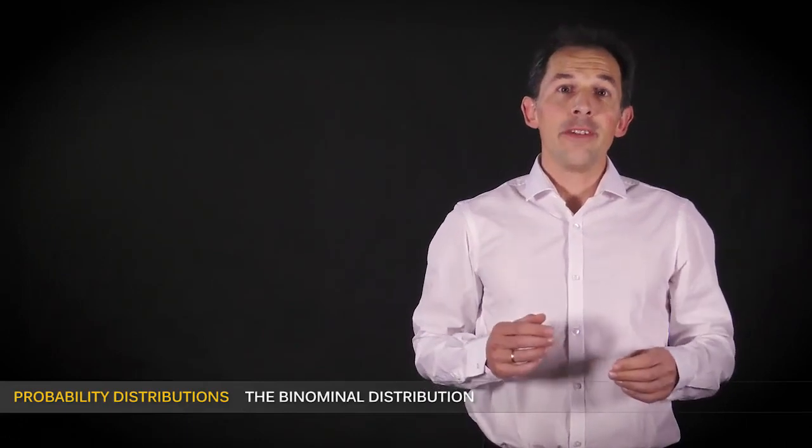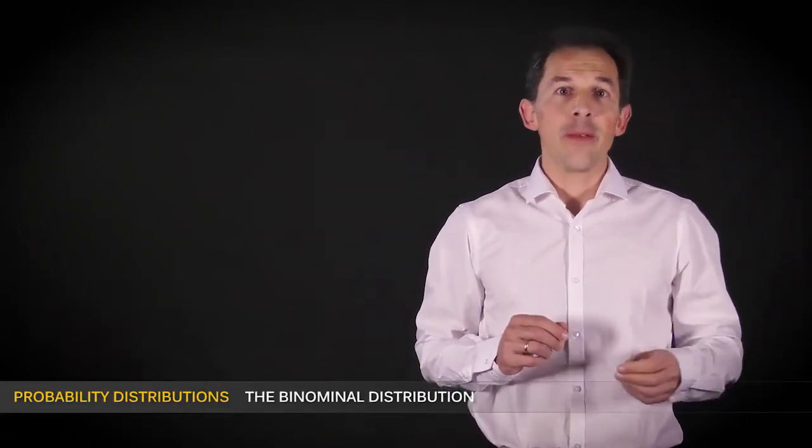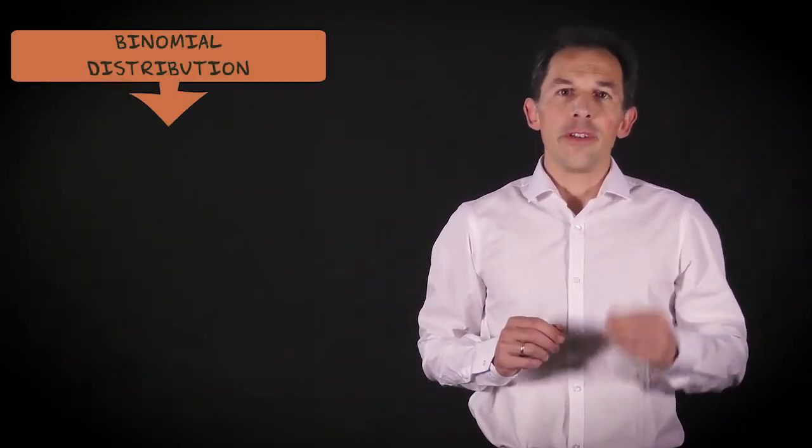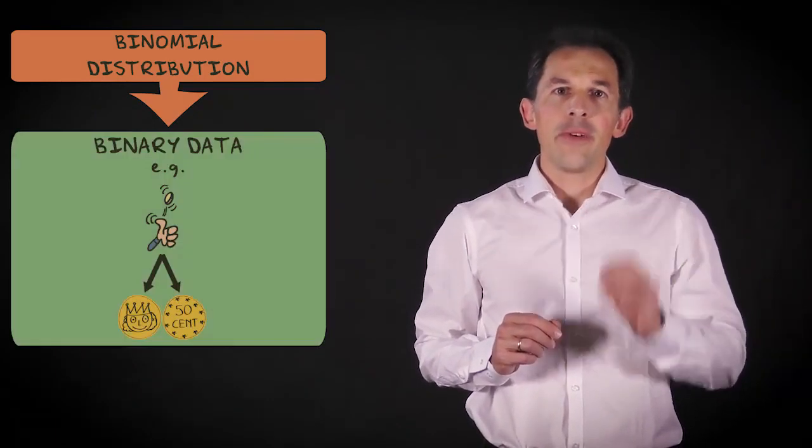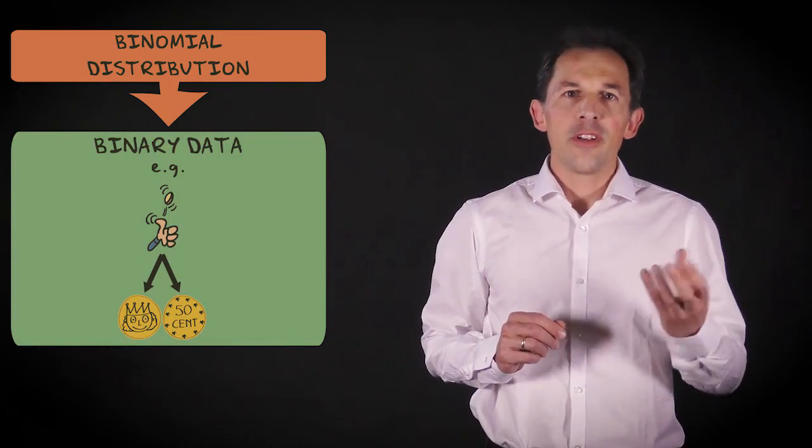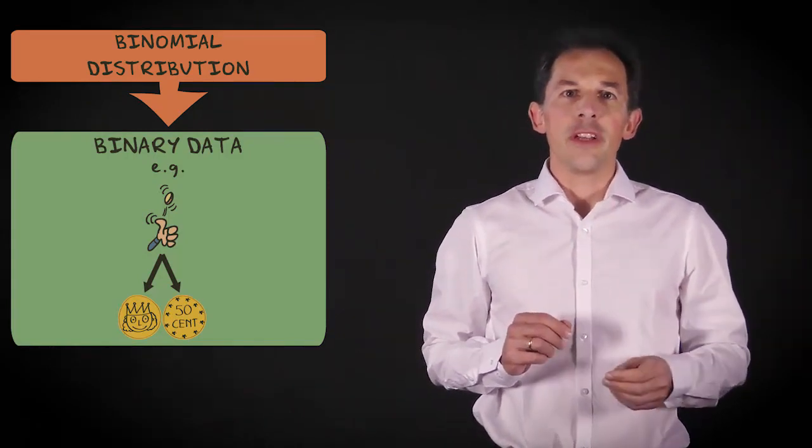The most important probability distribution for discrete random variables is the binomial distribution. It gives probabilities for counts with binary data. Because there are so many situations with binary data, it's used frequently.